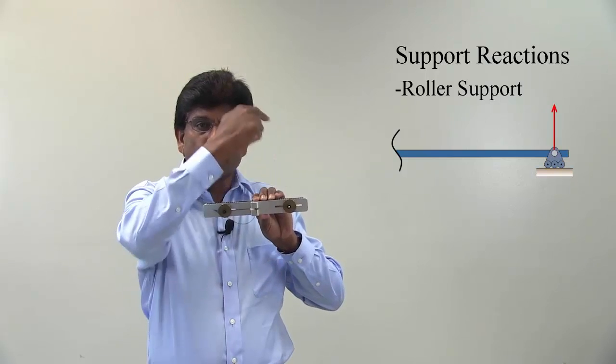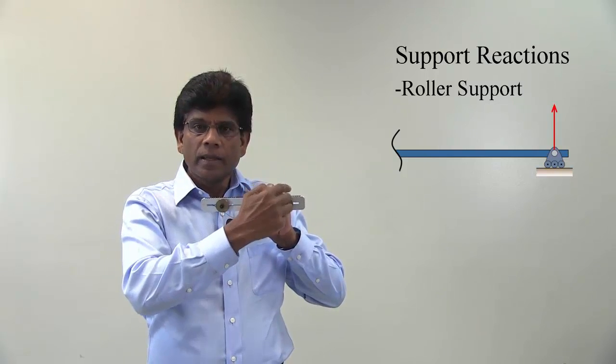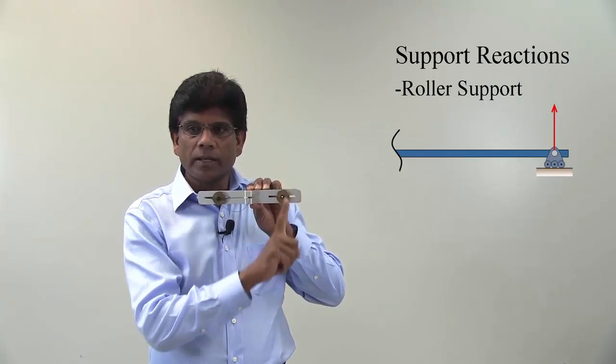The support resists translation motion along the axis perpendicular to the surface. This means it has only one support reaction along this vertical axis.